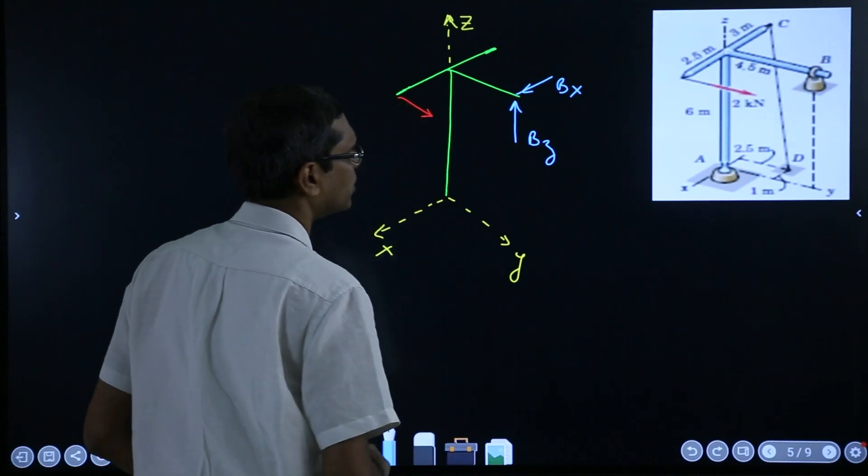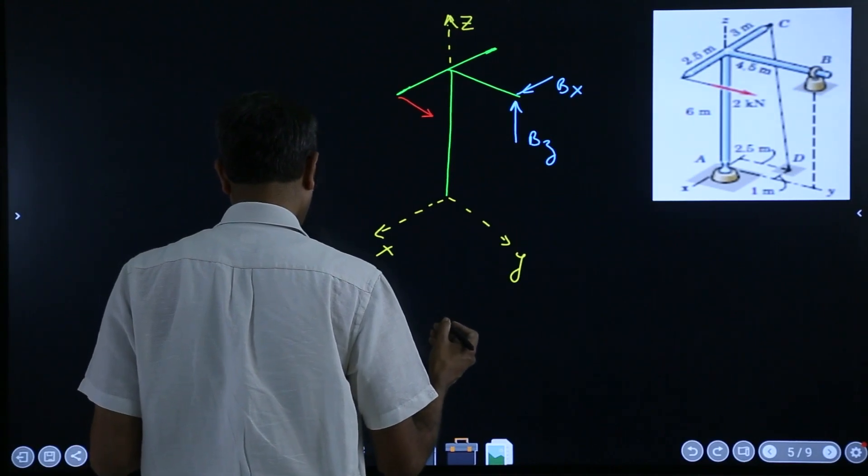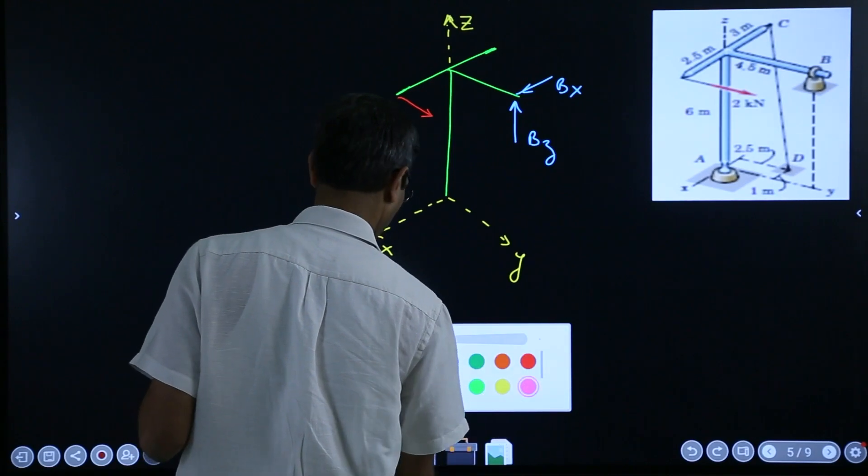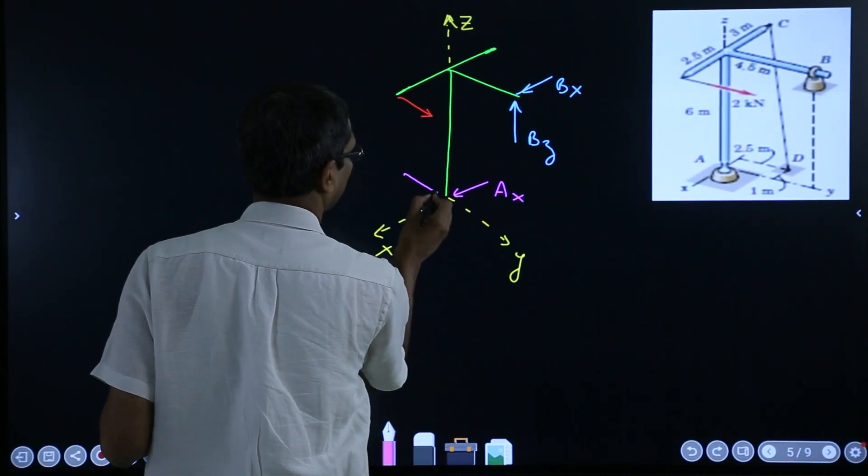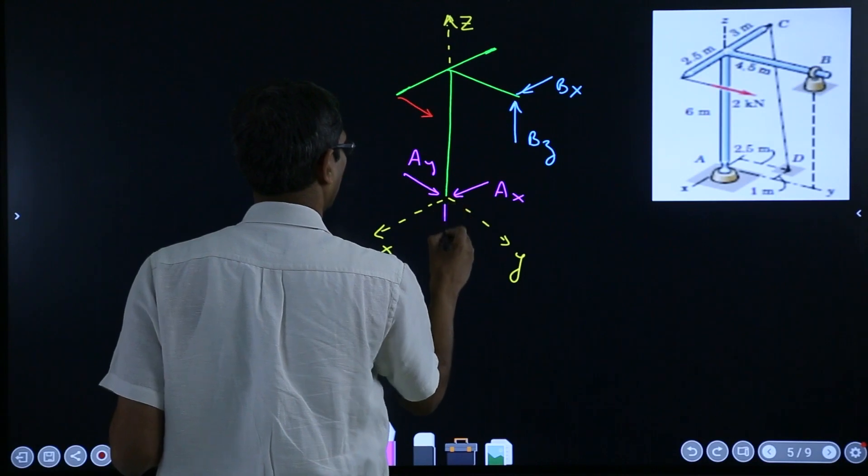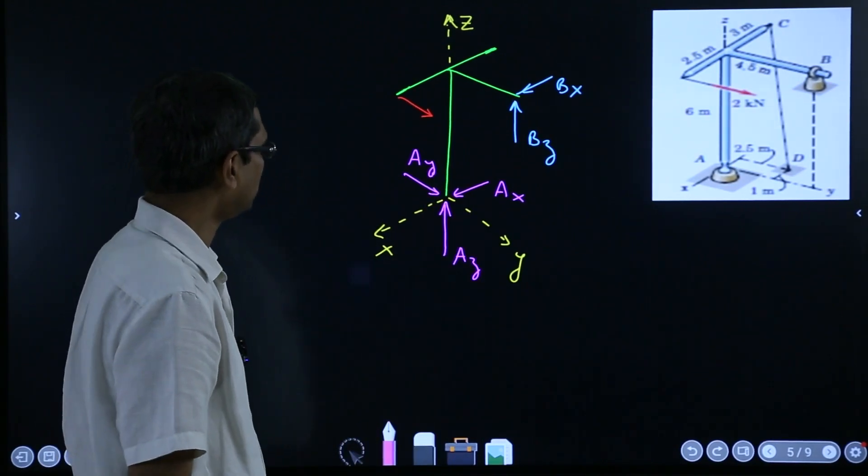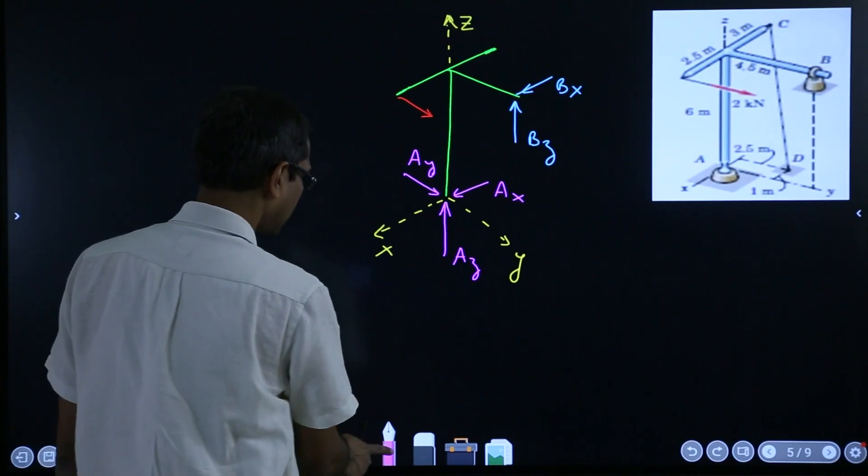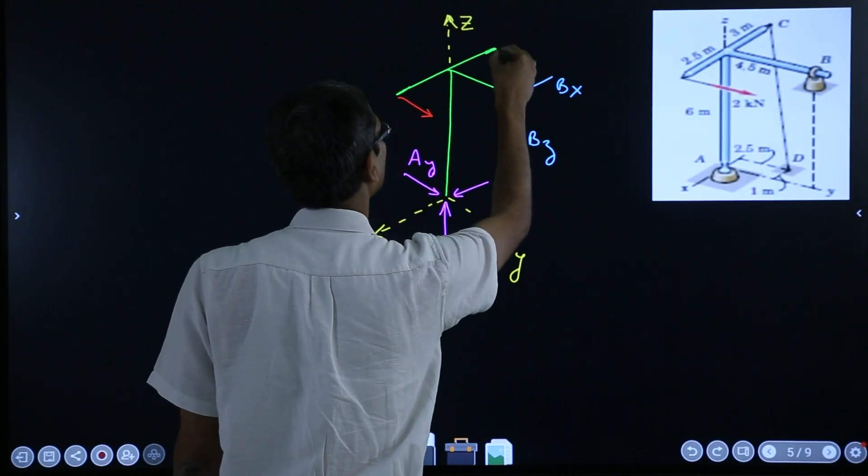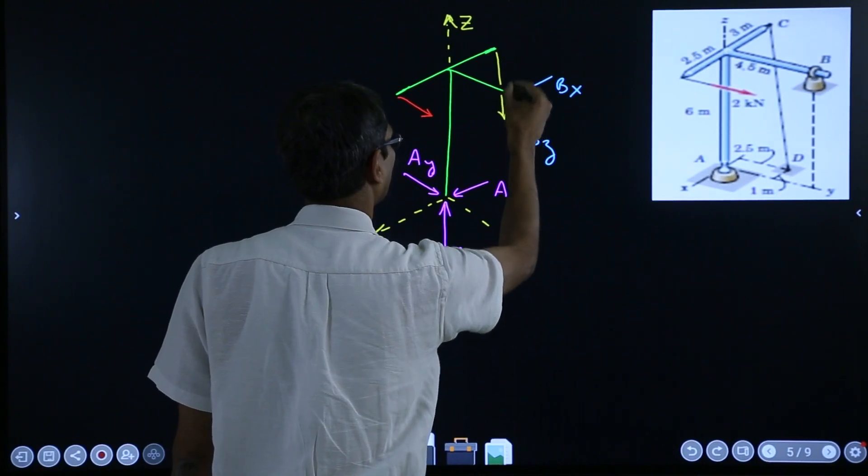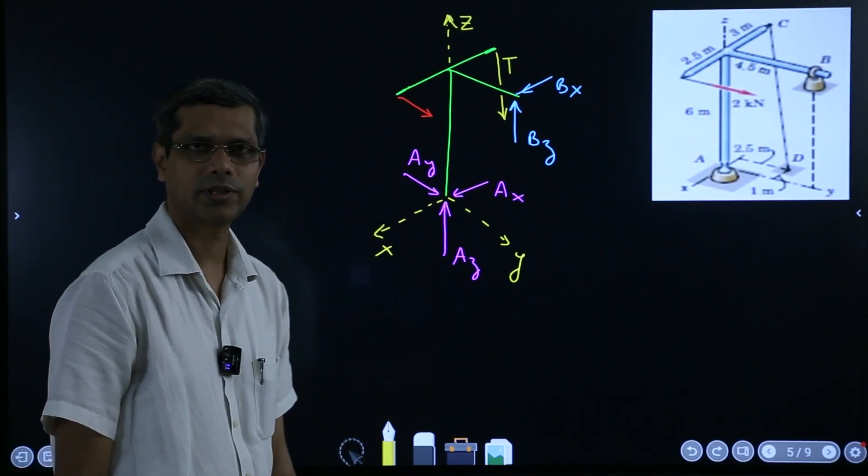And similarly here, at this point at the ball and socket joint, we can have reactions like say Ax coming from this side, maybe Ax. Similarly, Ay coming from this side and Az coming from this side. So these are the forces and then there is a tension. The tension will be in this direction somehow and which will come here and join somewhere here. So this is the free body diagram of the frame.